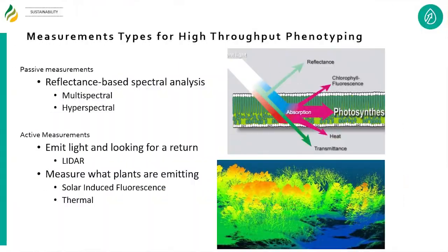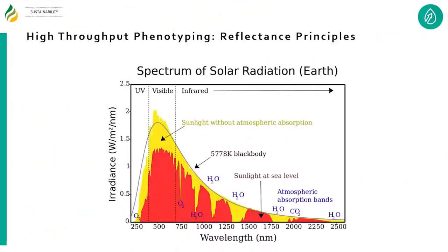I'm going to keep a focus on field research rather than artificial growth environments, though a lot of these techniques can be applied in greenhouses or growth chambers with a few adaptations. The passive measurements are generally reflectance-based spectral analysis — looking at what's being reflected up from the plants. I call it passive because the sun's doing all the work. Then there's active measurements: LiDAR, where a sensor shoots out a photon and measures how long it takes to come back, and also what plants emit — chlorophyll fluorescence and thermal information.